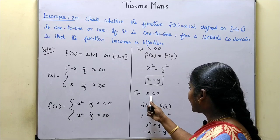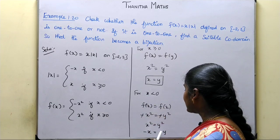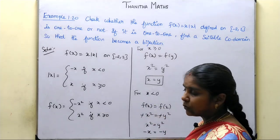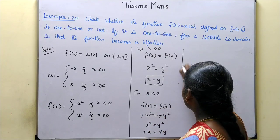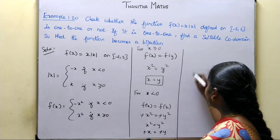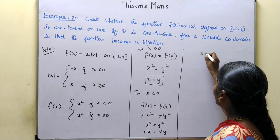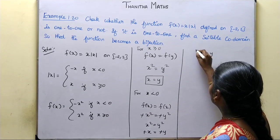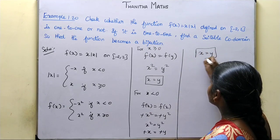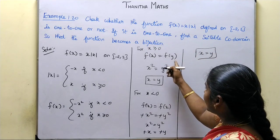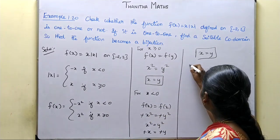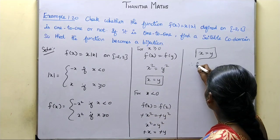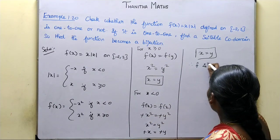Taking the square root for negative values, minus x equals minus y. The minus signs cancel, so x equals y. Therefore, f of x equals f of y implies x equals y for the negative case as well.